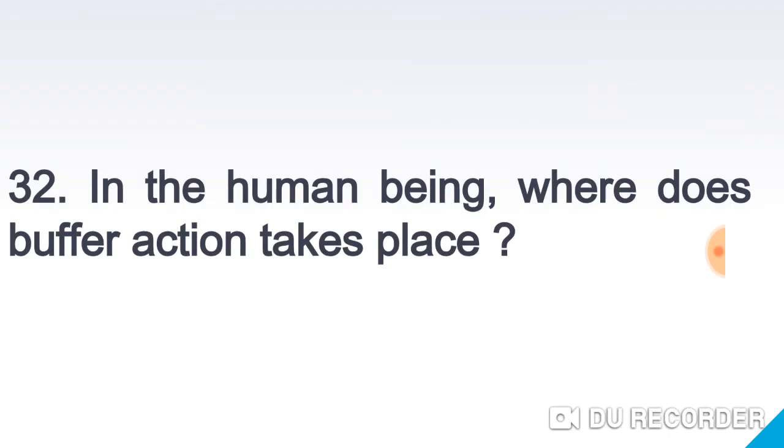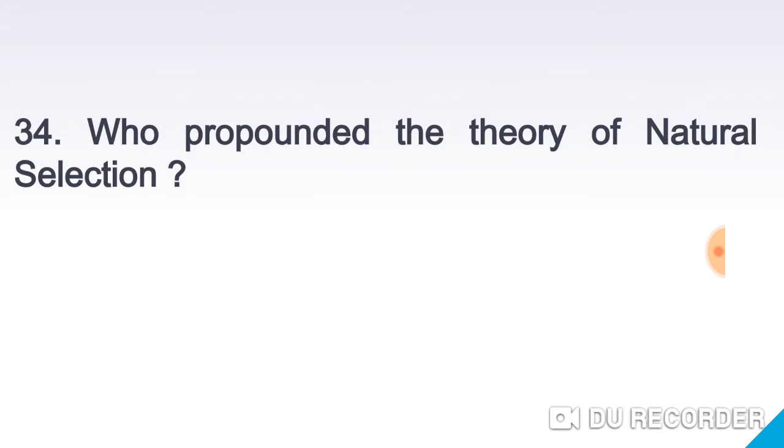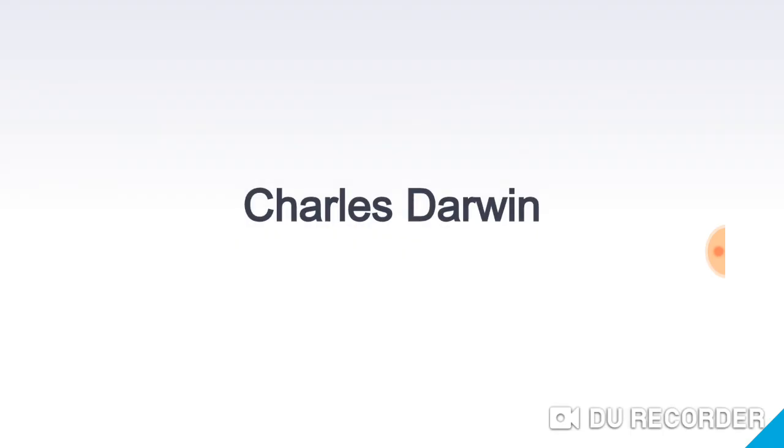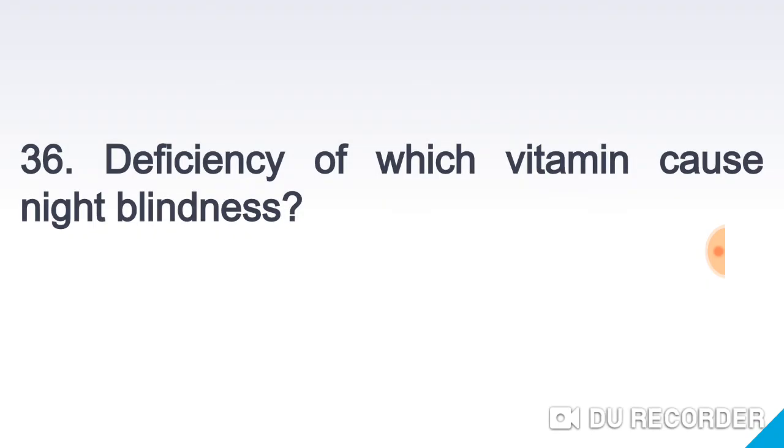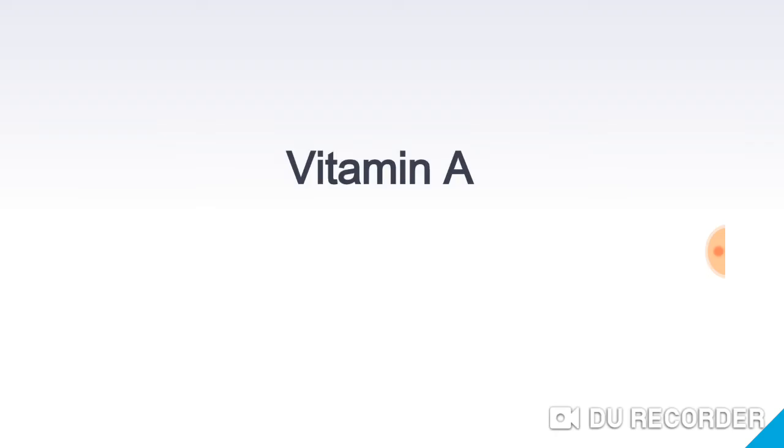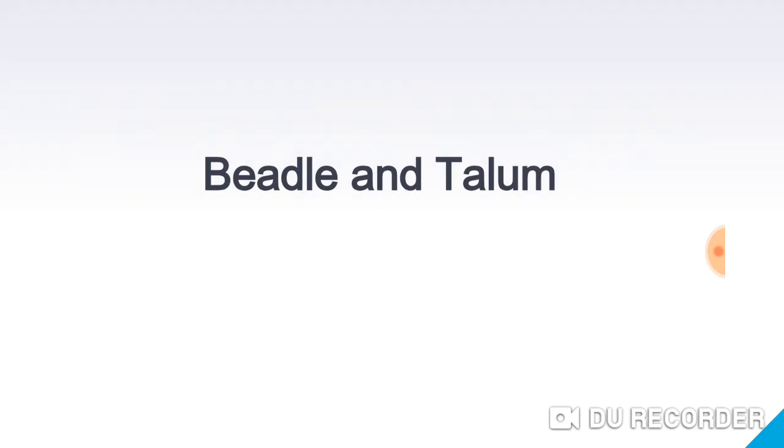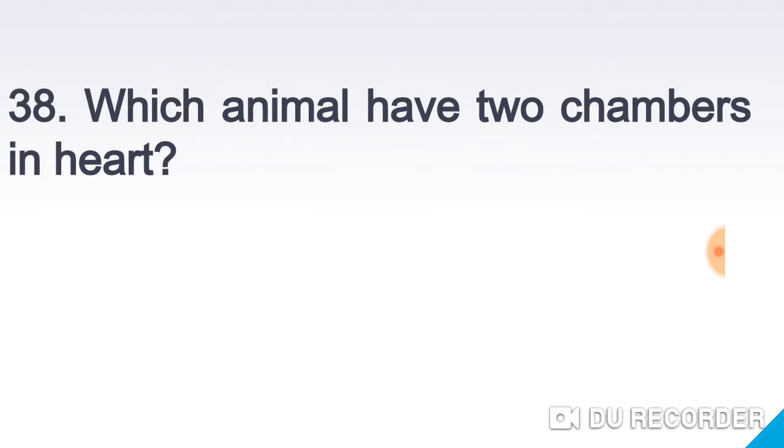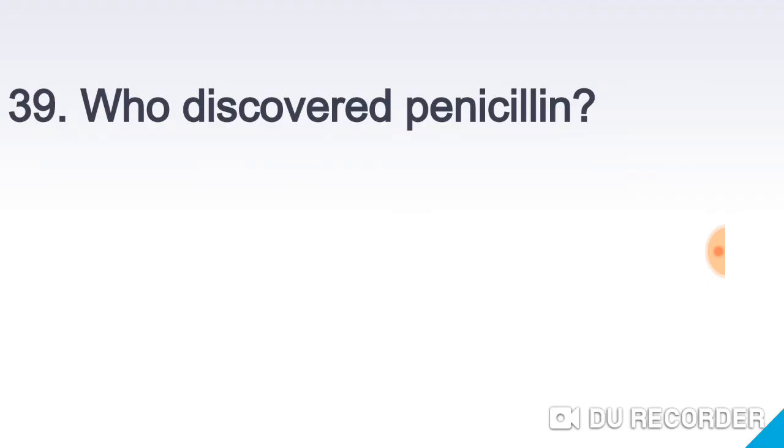In a human being, where does buffer action take place? Stomach juice. Who invented oral polio vaccine? Sabin. Who propounded the theory of natural selection? Charles Darwin. Who wrote the book Origin of Species? Charles Darwin. The deficiency of which vitamin causes night blindness? Vitamin A. Who put forward the hypothesis of one gene and one enzyme? Beadle and Tatum. Which animal has two chambers in heart? Fish. Who discovered penicillin? Alexander Fleming.